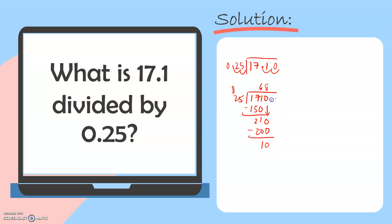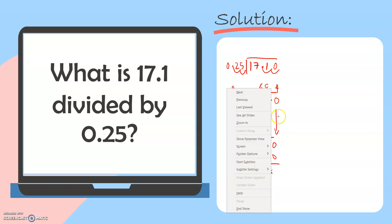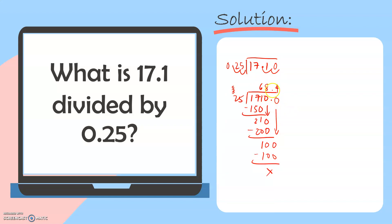That means we need to add a decimal point and 0 in our dividend. Then we bring down that 0. 100 divided by 25 will give us 4, and 4 times 25 is 100. 100 minus 100 is 0. Since there's no more remainder, we will no longer add 0 in our dividend. For the final step, we simply align this decimal point in the dividend to our quotient.